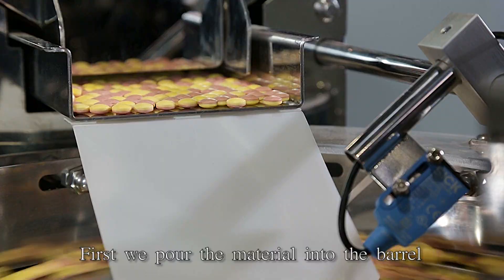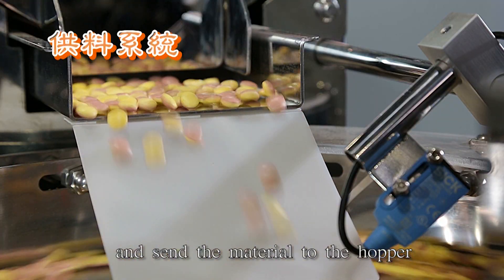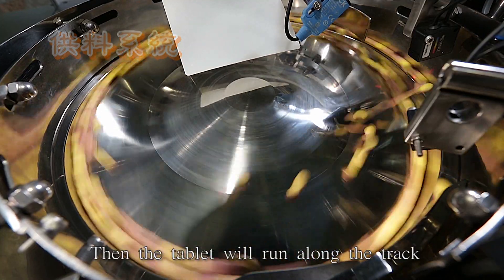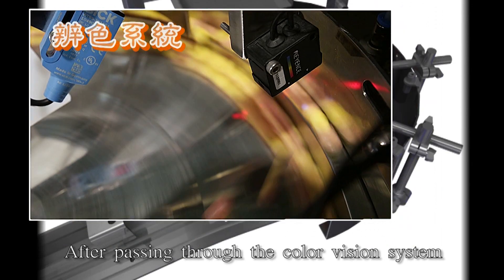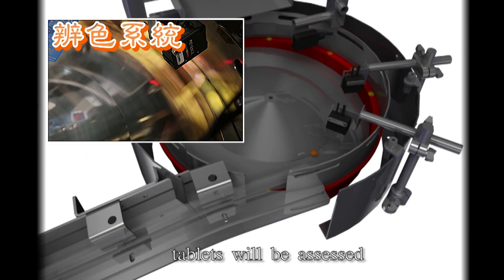First we pour the material into the barrel and send it to the hopper under the control of a sensor. Then the tablet runs along the track of a turntable by centrifugal force. After passing through the color vision system, tablets are assessed.